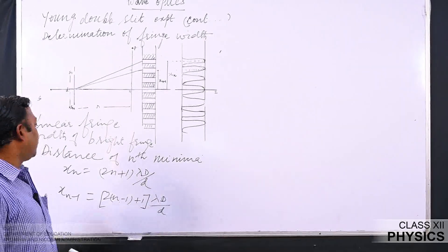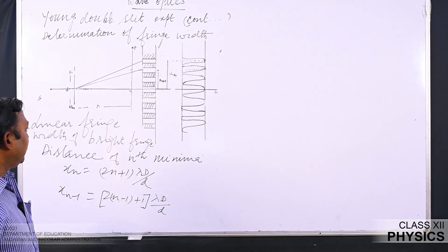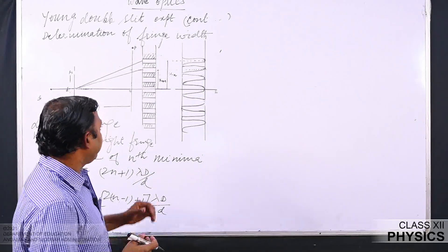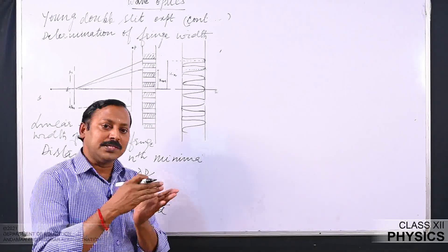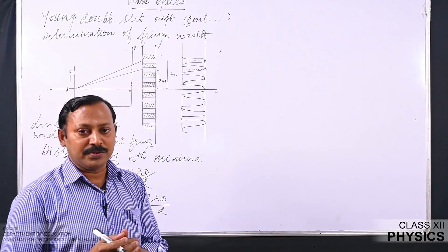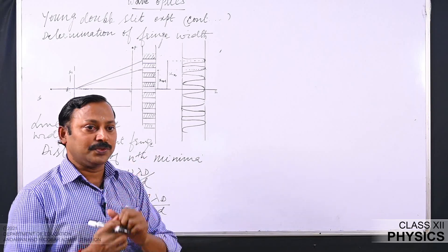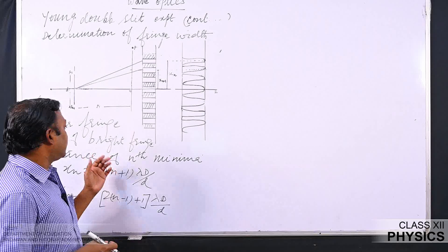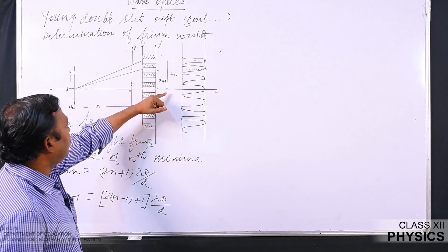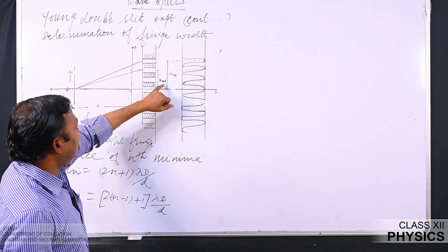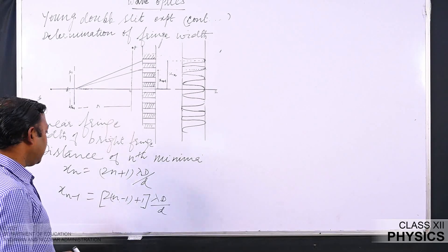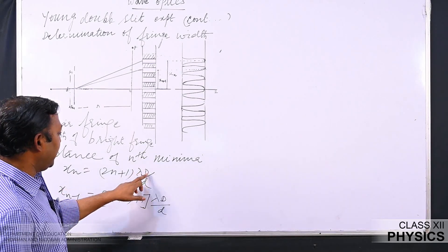Now we will find the fringe width of the bright fringe. To find the fringe width of a bright fringe, we take two consecutive dark fringes and find the distance of those two consecutive dark fringes from the central fringe, then subtract them. The distance of nth minima calculated in our previous class is x_n = (2n+1)·lambda·D / (2d), and the distance of the (n−1)th minima is obtained by replacing n with n−1, giving (2(n−1)+1)·lambda·D / (2d).